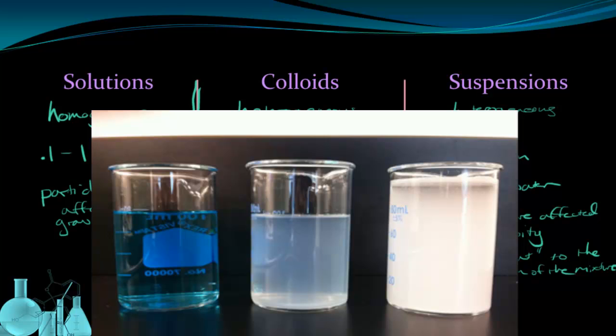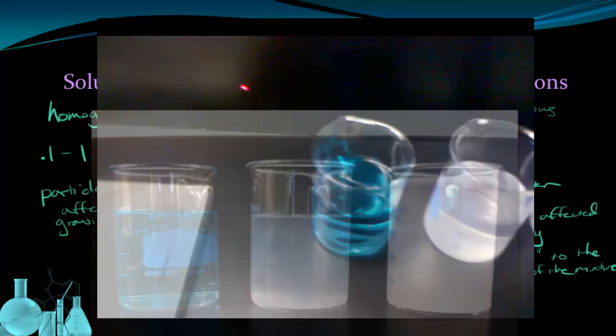Here we have three beakers filled with mixtures. The beaker on the left, the blue one, has a solution in it. The middle beaker has a colloid in it. And the last beaker has a suspension in it. We're going to shine a laser pointer at each one of these and see if the light of the laser pointer is scattered as it passes through the solution.